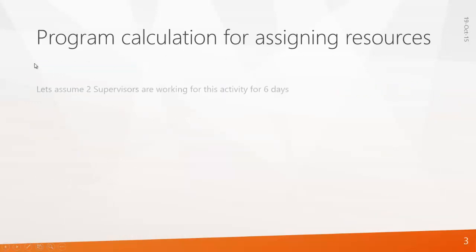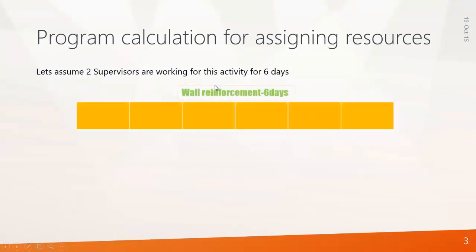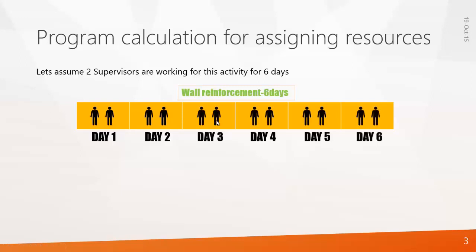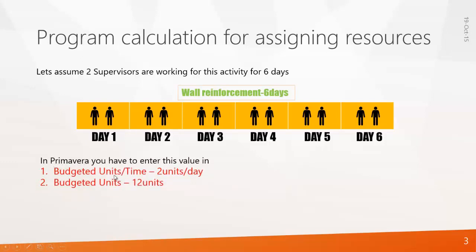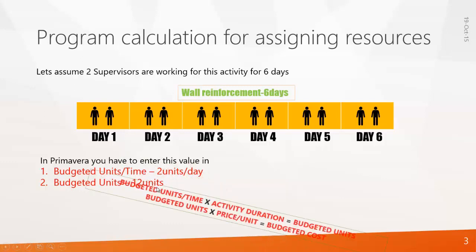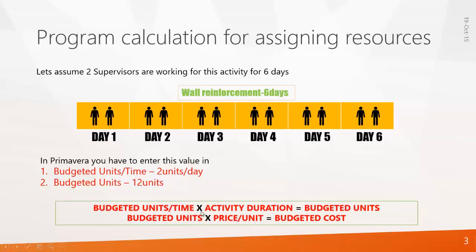Let's assume 2 supervisors are working for this activity for 6 days — Wall Reinforcement, 6 days. Day 1: 2 supervisors are working. Day 2 again 2, Day 3, Day 4, Day 5 and Day 6. So how do you assign resources? In Primavera, you can enter this value as budgeted units per time — that is 2 units per day — or you can enter this value as budgeted units as 12 units. The program calculates based on this equation: budgeted units per time multiplied by activity duration gives you budgeted units, and budgeted units times price per unit gives you budgeted cost. Let's open Primavera and see how this works.